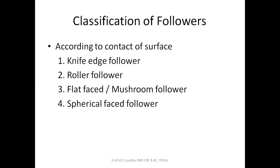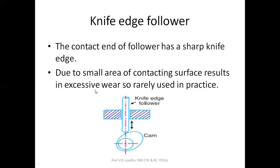Next is the classification of FOLLOWERs. FOLLOWERs are classified into three categories. The first category is according to the contact surface. The first type is the KNIFE EDGE FOLLOWER, where the contact end of the FOLLOWER with the CAM forms a sharp edge or point. Due to this sharp end, it leads to excessive wear, so this type of FOLLOWER is rarely used in practice.